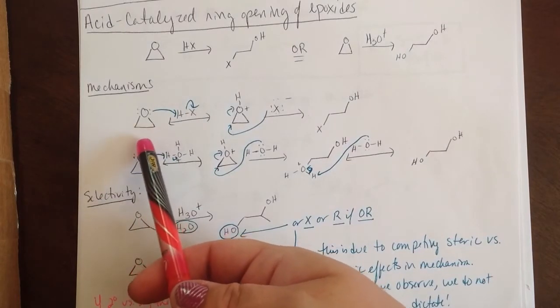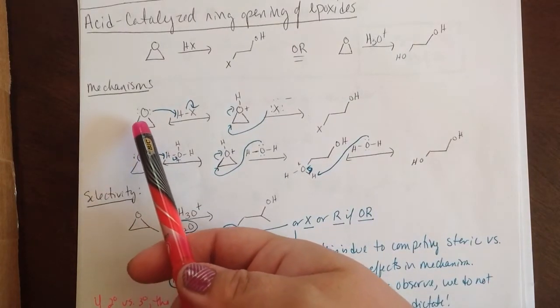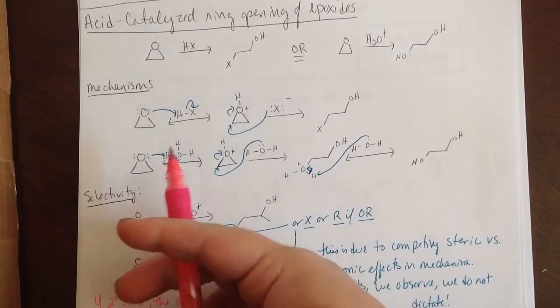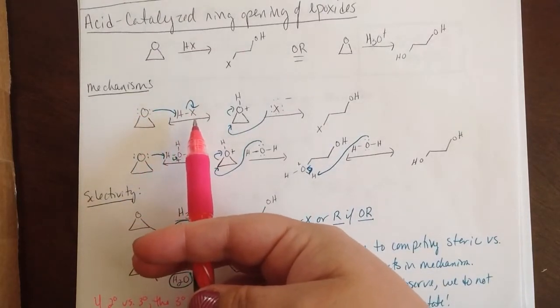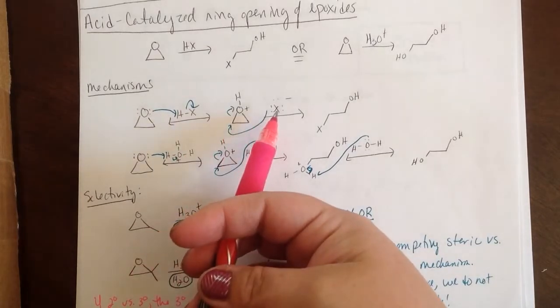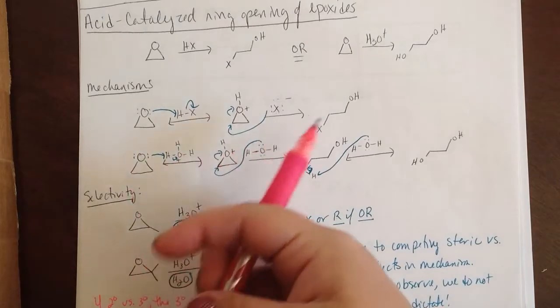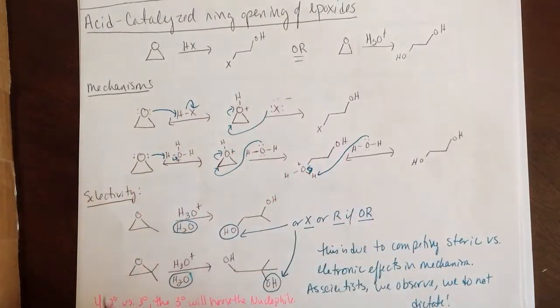Here we have an epoxide. Let's look at this mechanism. When it reacts with HX, the oxygen will come and grab that hydrogen. Electrons fall back to the X, whatever that is. Then it leaves behind a nucleophile that will come in here and bounce out the OH. And you end up with the OH and the X. That's pretty straightforward.